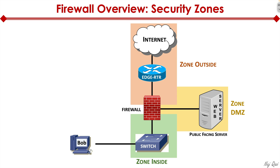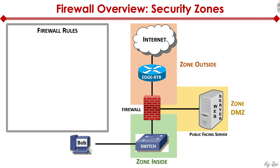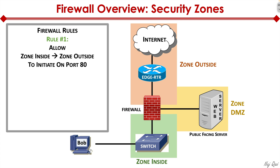Now let's take our security zones to the next level. We still have zone outside at the top and zone inside at the bottom. We now have a third zone to the right of the firewall — the zone DMZ, or demilitarized zone. Here we have a public-facing web server that we want internet users to connect with — like amazon.com or google.com. They configure it this way, with a DMZ zone where their web servers sit to serve customers. The first rule may say: allow zone inside to speak with zone outside over port 80. That's allowed.